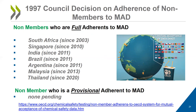Full adherents have the same rights and obligations as OECD member countries under the Council Acts related to MAD. There are currently several non-member countries who are full adherents to MAD. These include South Africa, Singapore, India, Brazil, Argentina, Malaysia, and more recently, Thailand. Currently, there are no non-members who are provisional adherents to MAD.